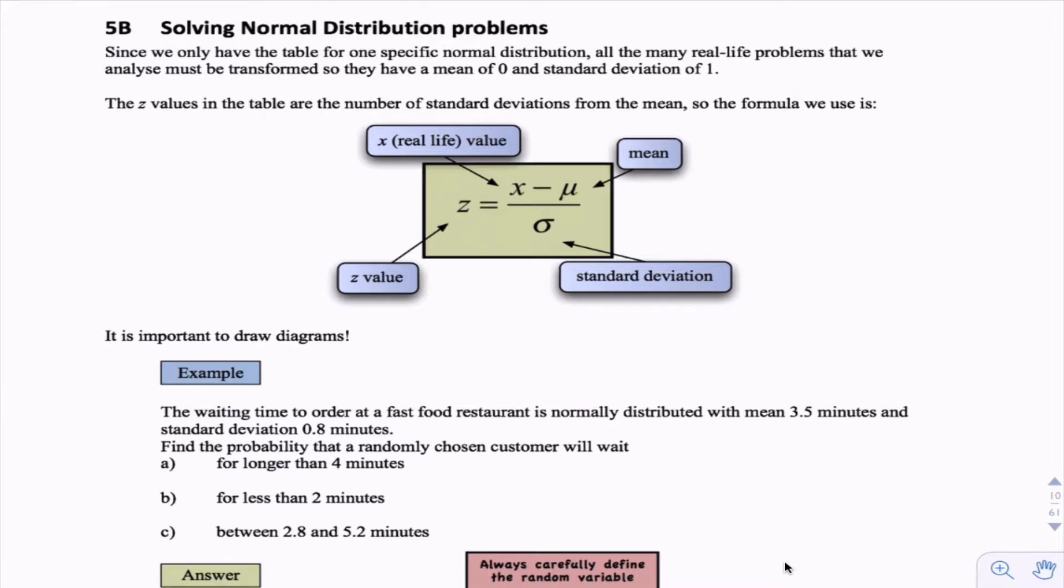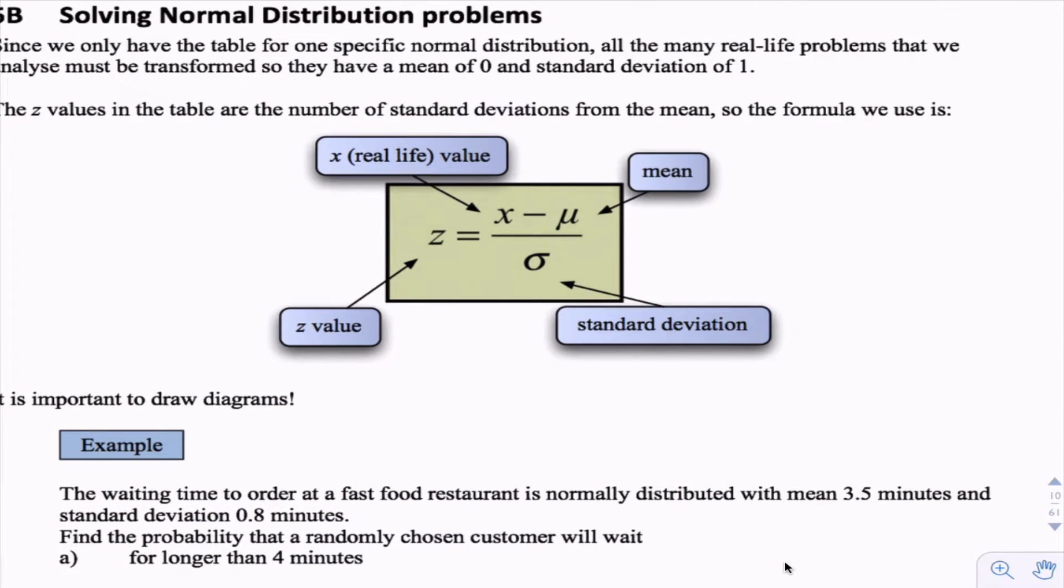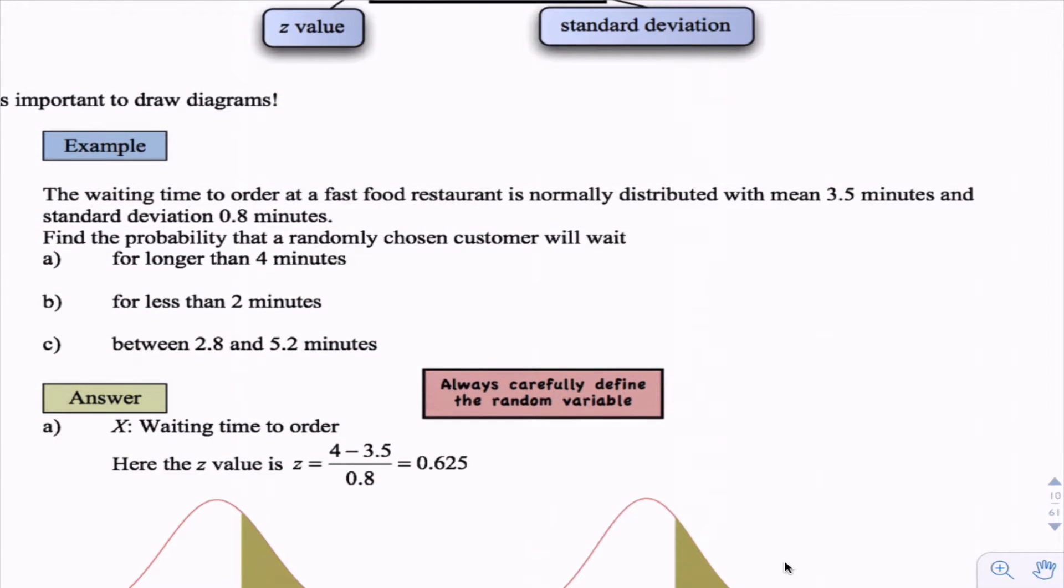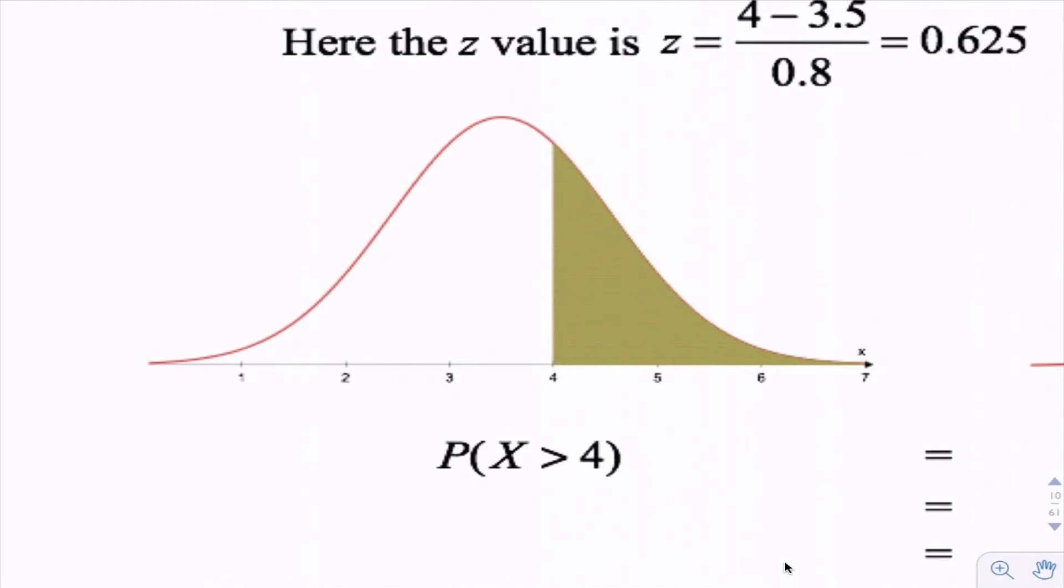Here's how we use the normal distribution to solve realistic problems. Here's that formula about how we standardize the score. We normally use z to represent a standardized score. This is the problem: the waiting time to order in a fast food restaurant is normally distributed with mean 3.5 minutes and standard deviation 0.8 minutes. You can see we've got the graph down here. The mean is 3.5 right there in the middle, and the standard deviation is 0.8.